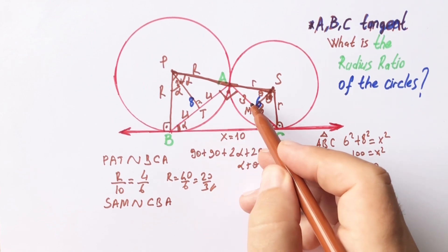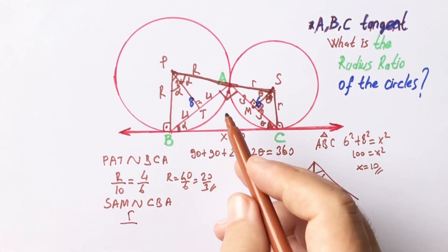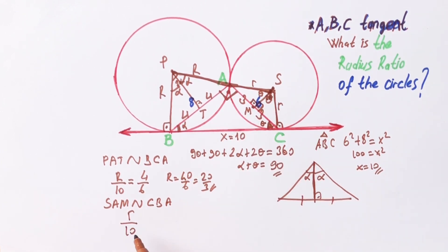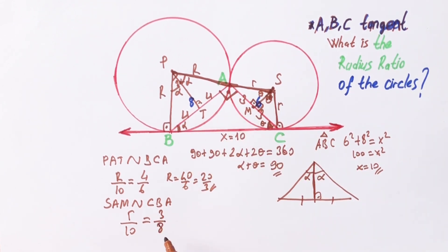Across 90 degrees is r over across 90 degrees is 10 units, equals across theta is 3 over across theta is 8. So r is going to be 15 over 4.